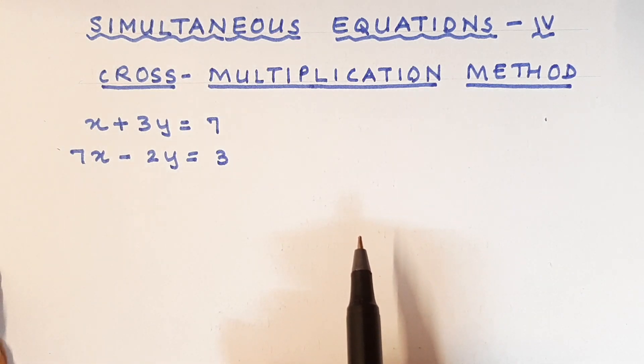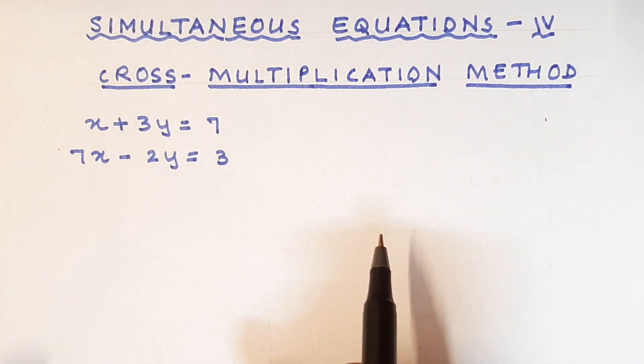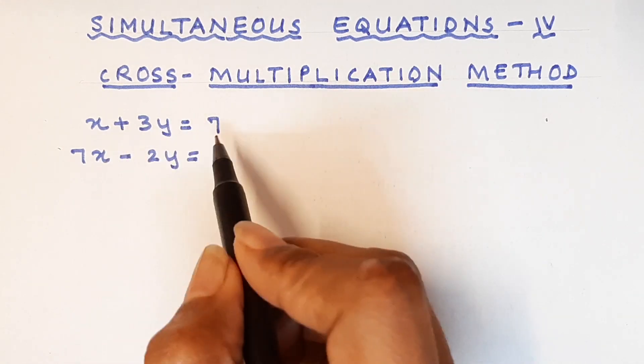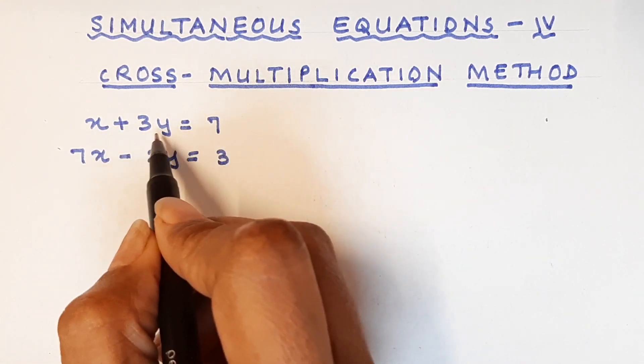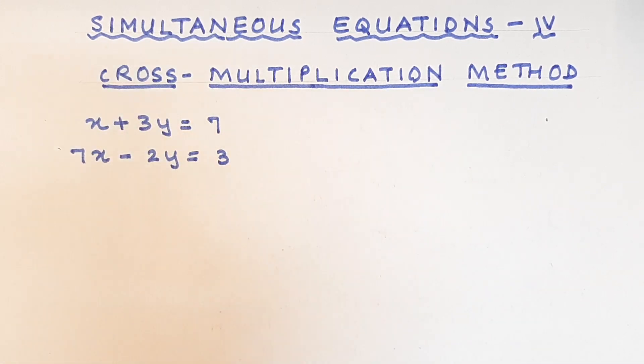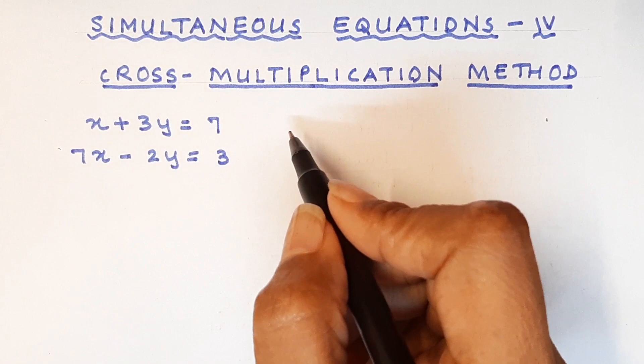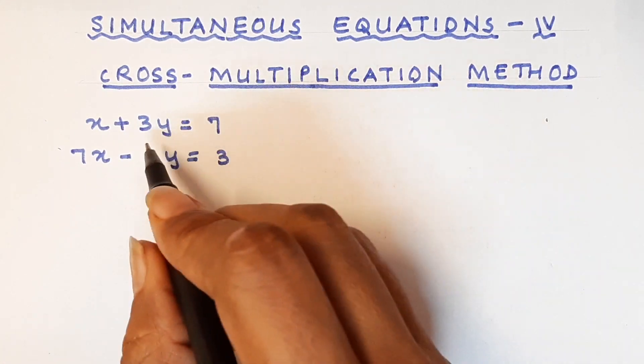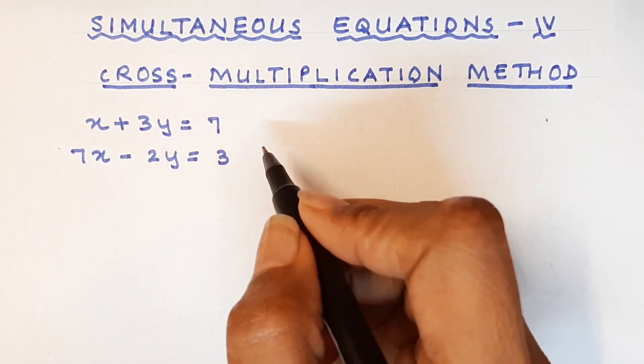So now let us see how we use elimination method. We have been given two equations: x plus 3y equal to 7 and 7x minus 2y equal to 3. Now by and large, this becomes an easy method if you understand the knack of it.